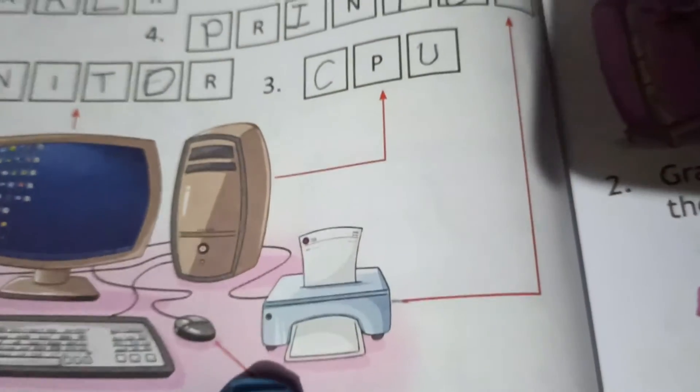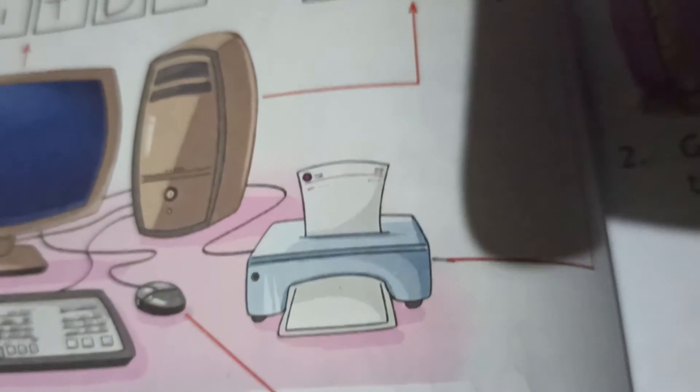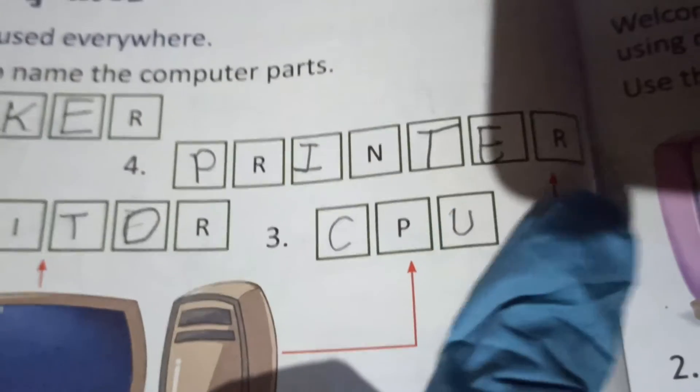The fourth one, the arrow comes from this side. Look here, this is what? This is a printer. یہ printer ہوتا ہے, اس میں paper print ہو کر کے نکلتا ہے. Printer کی help سے ہم paper کو print کرتے ہیں. Write down the spelling of printer, that is P-R-I-N-T-E-R, printer.